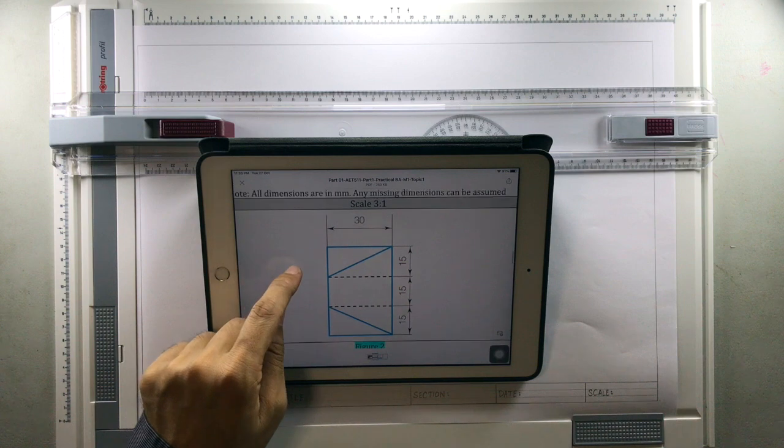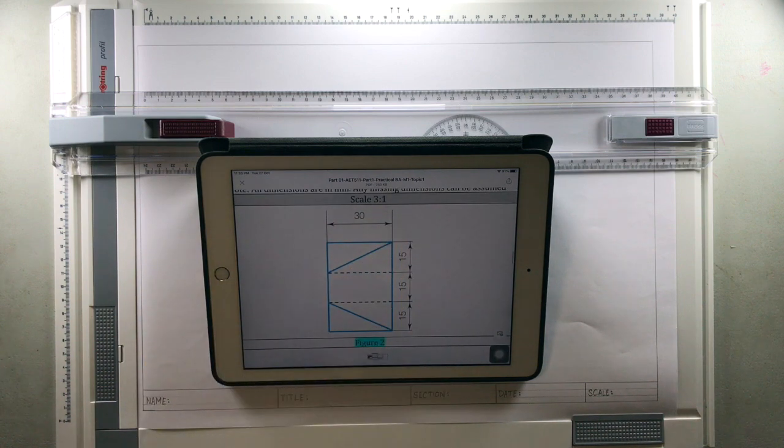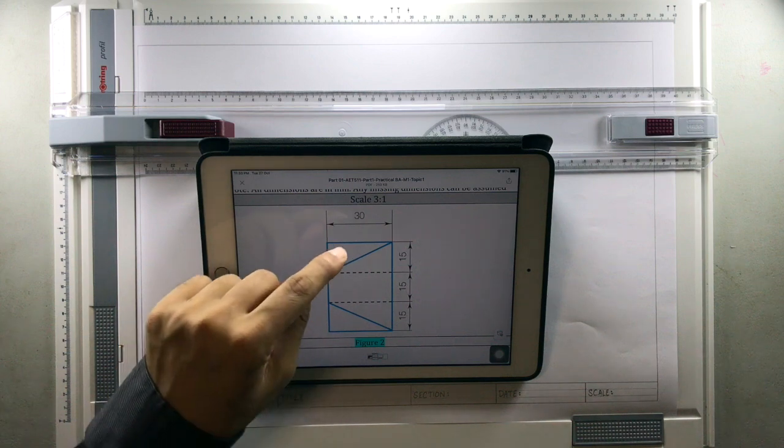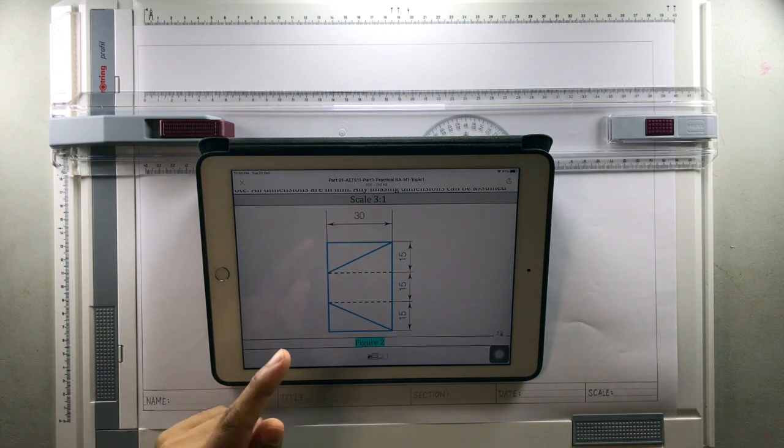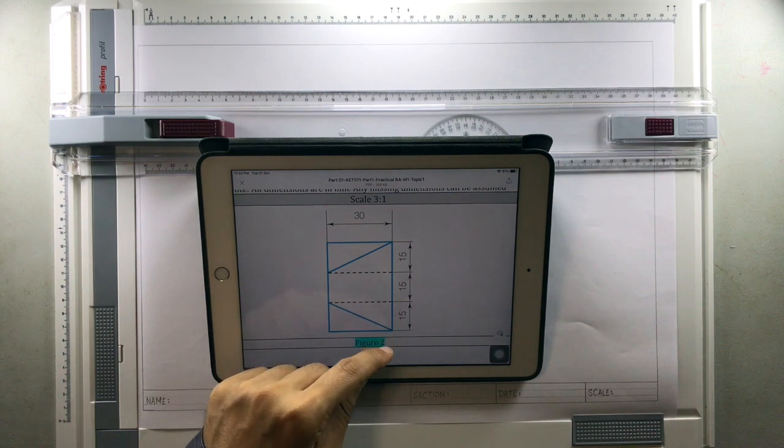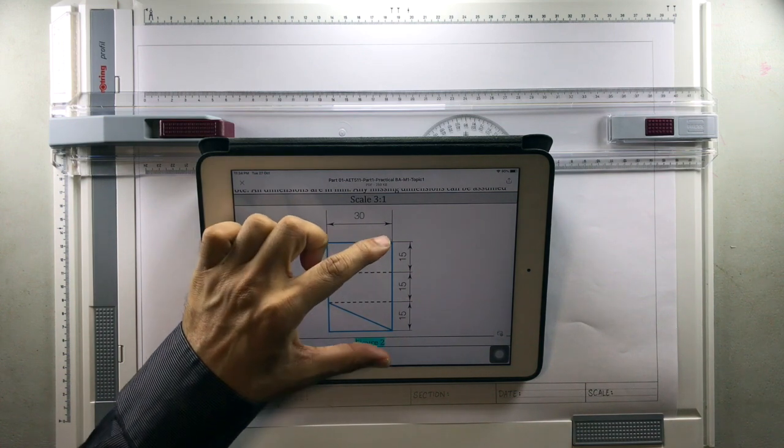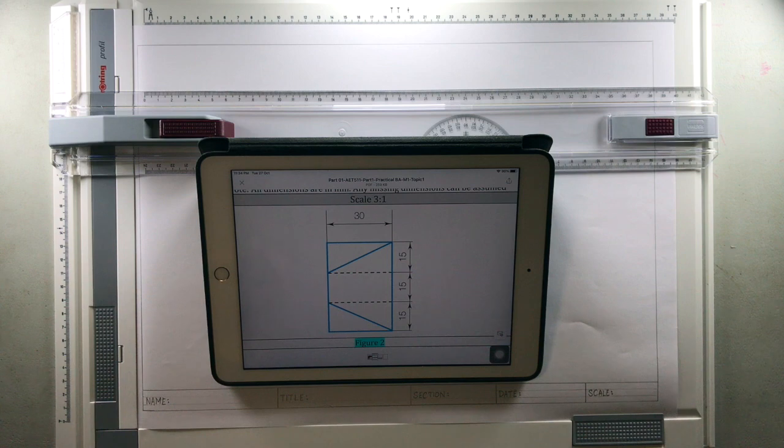Here the scale that has to be followed is 3 to 1, which means we are going to enlarge it. So the 3 centimeters or 30 millimeters becomes 90 millimeters, whereas all these 15s will become 45. So the overall height here, which is 45 times 3, is going to become 135 millimeters.